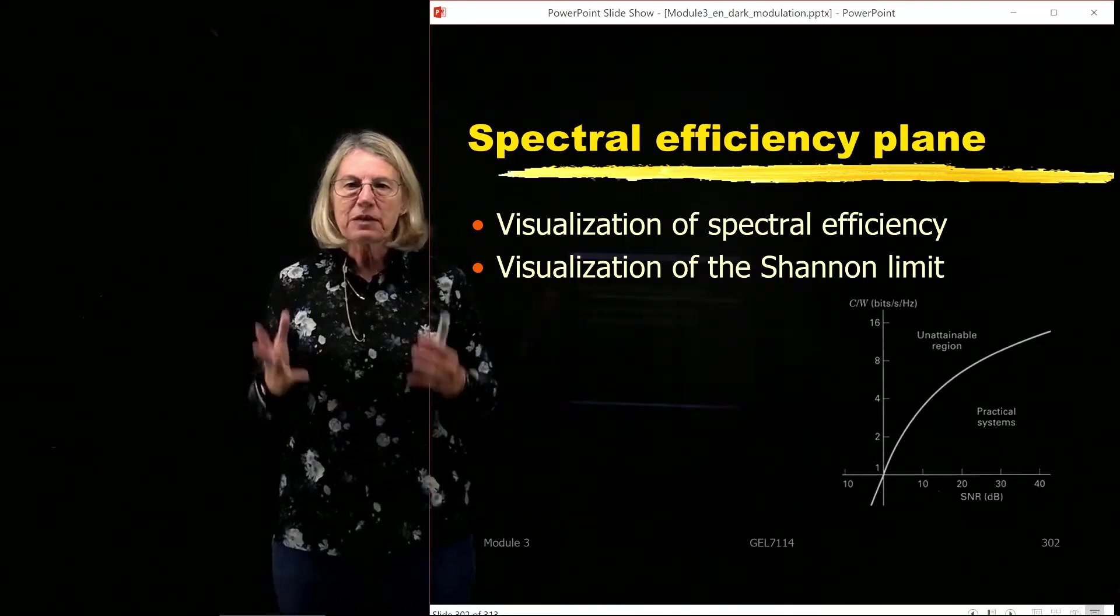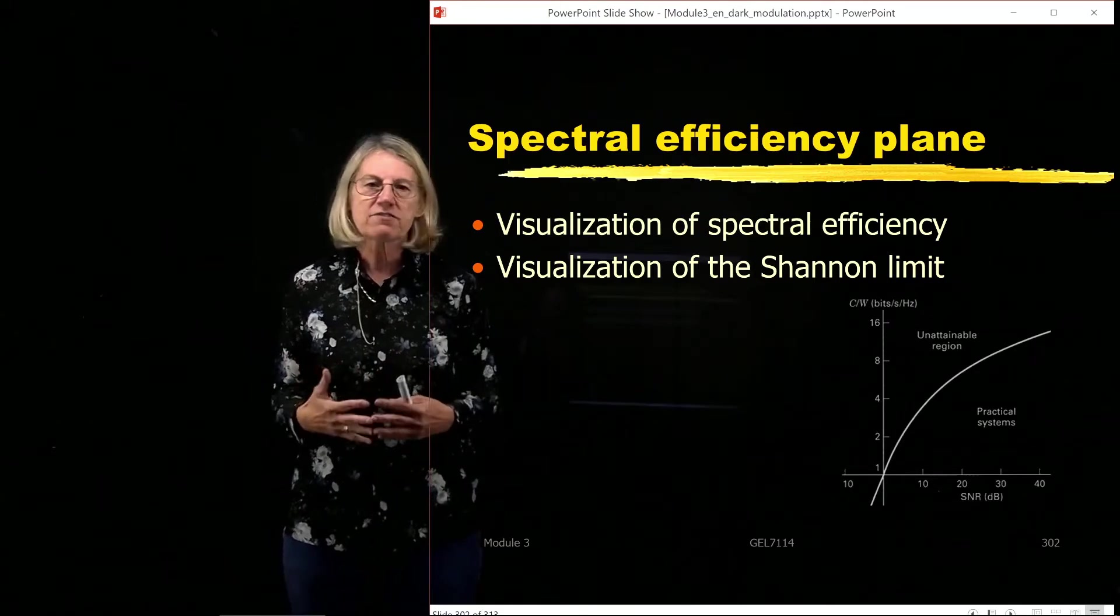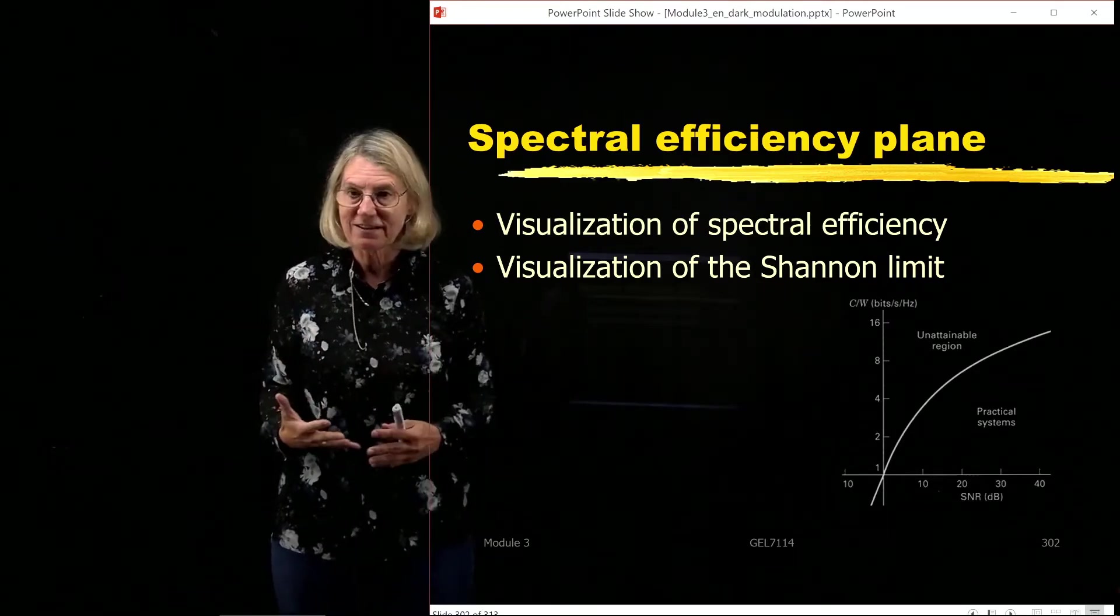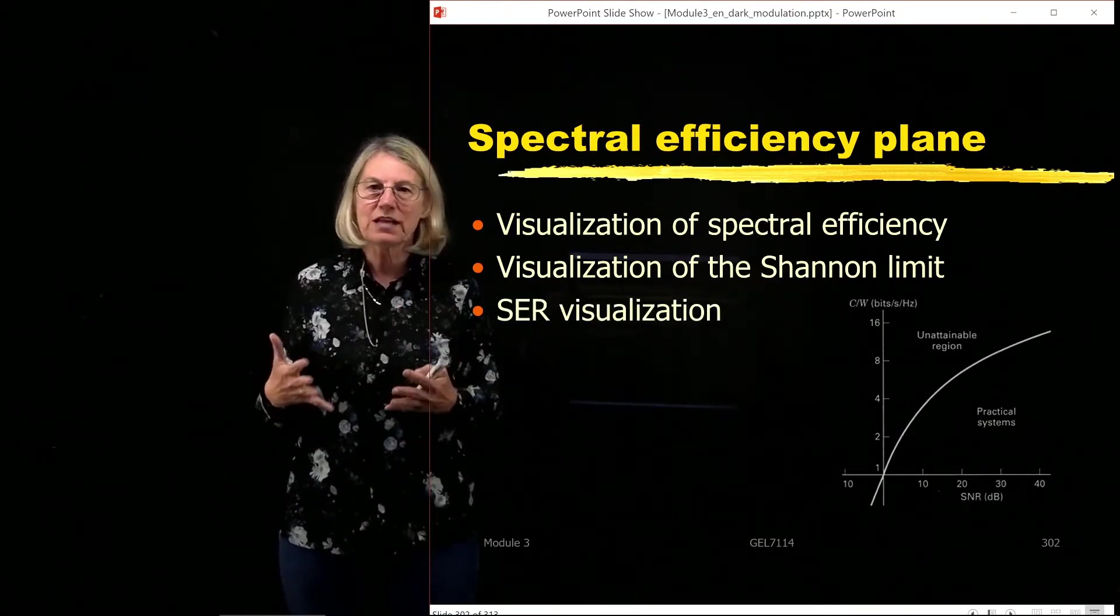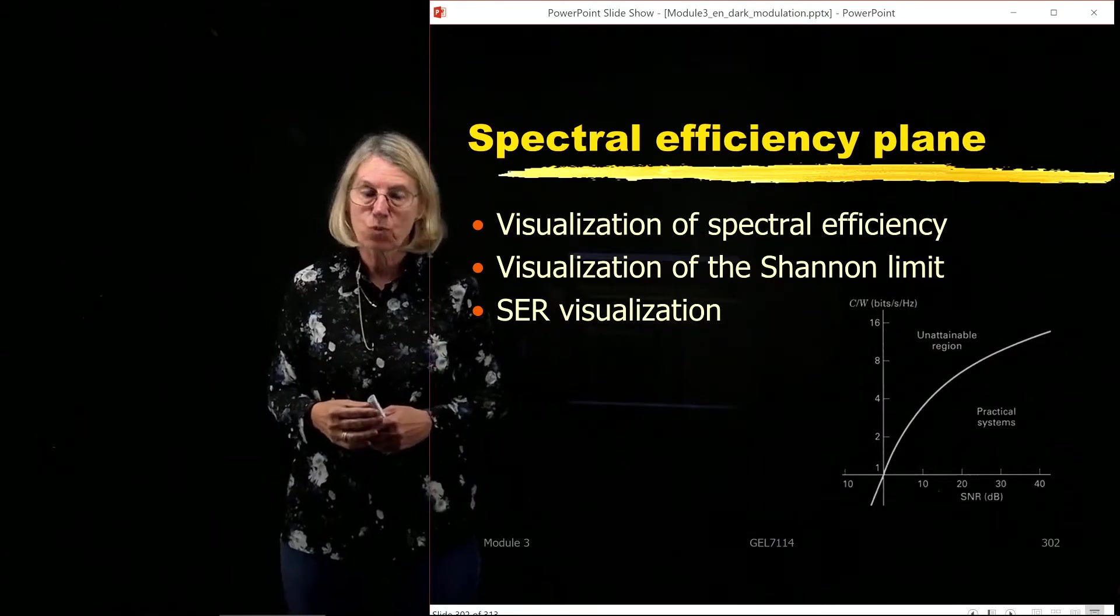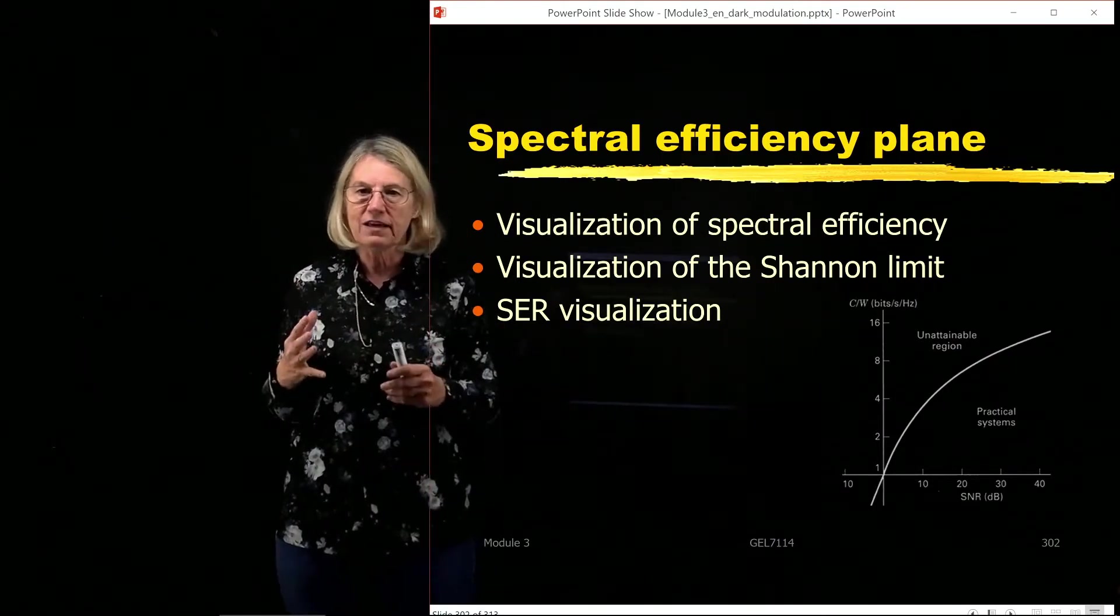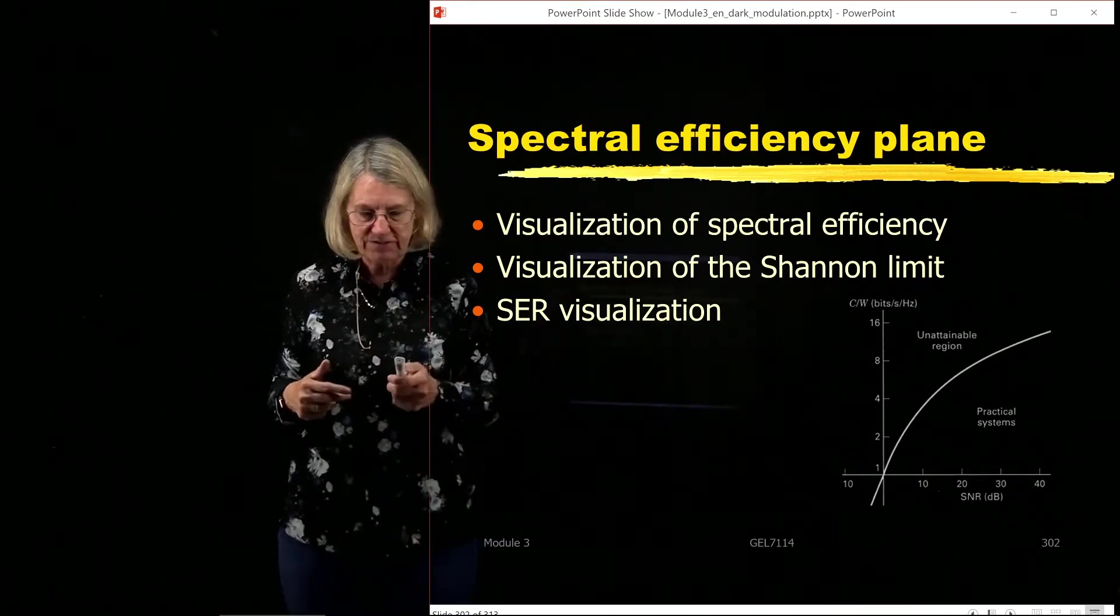So the spectral efficiency plane is a way that we can visualize the trade-offs made with spectral efficiency. It's a visualization of Shannon's limit about the channel capacity, but we can also add to that a way to visualize the symbol error rate as well. I'm going to try and show you how all of these can be conveyed into this very simple spectral efficiency plane.